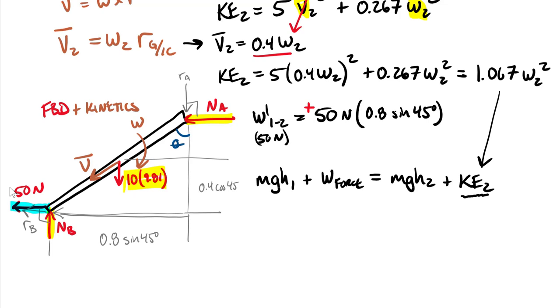Looking at gravitational potential energy, I need to pick a datum. My datum I pick the ground. You could pick the final or initial location of the centroid, but we need to measure distances, a change in distances to that centroid. Putting numbers in, we have 10, which is the mass, gravitational constant 9.81. The height initial is 0.4 meters, half of the length of that rod because it was standing vertically against the wall.